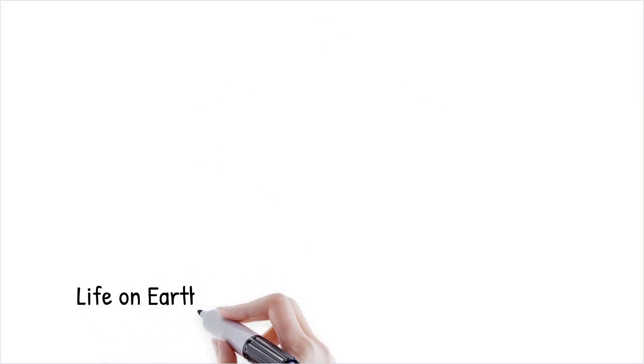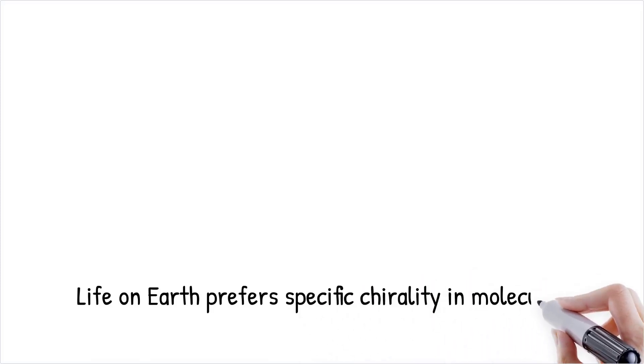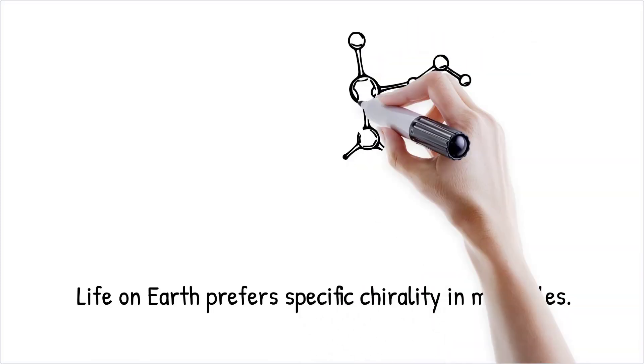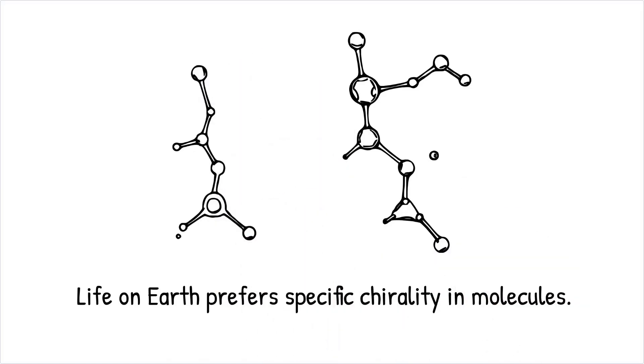For reasons not fully understood, life on Earth overwhelmingly prefers one type of chirality: left-handed amino acids and right-handed sugars. The preference for one chirality is referred to as homochirality. This asymmetry is fundamental to how biological systems function, as enzymes and receptors are highly specific, interacting only with molecules of the correct chirality.